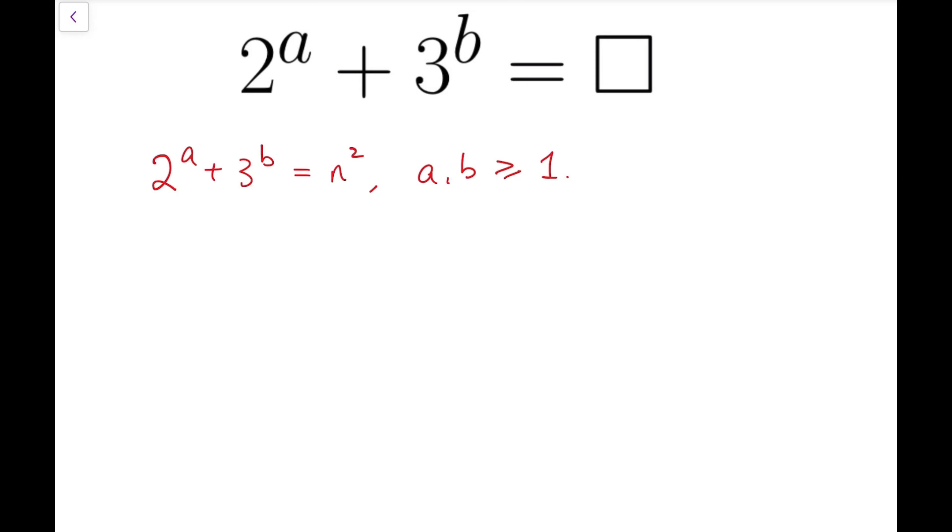So by trial and error, you will get one of the solutions to be a and b equal to 4 and 2 respectively. And more importantly, there is no solution when a and b are smaller than these two numbers.